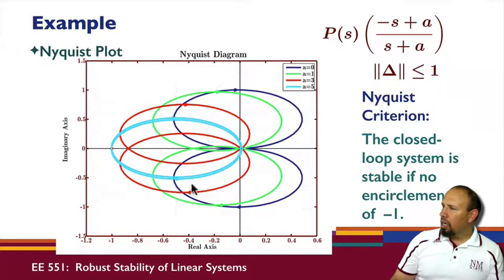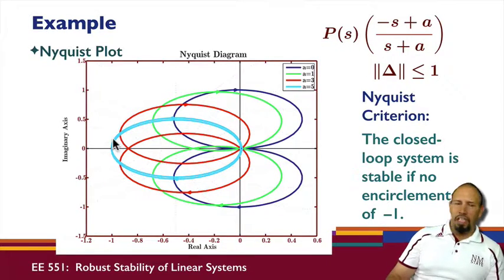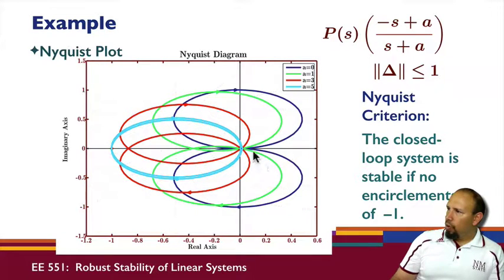When a is equal to zero—remember our original plant was stable—notice the minus one point is definitely not affected. When a is one, we're encroaching on the minus one point. When a is equal to three, our Nyquist plot shifts over this way. When a is equal to five, we're right on top of that.